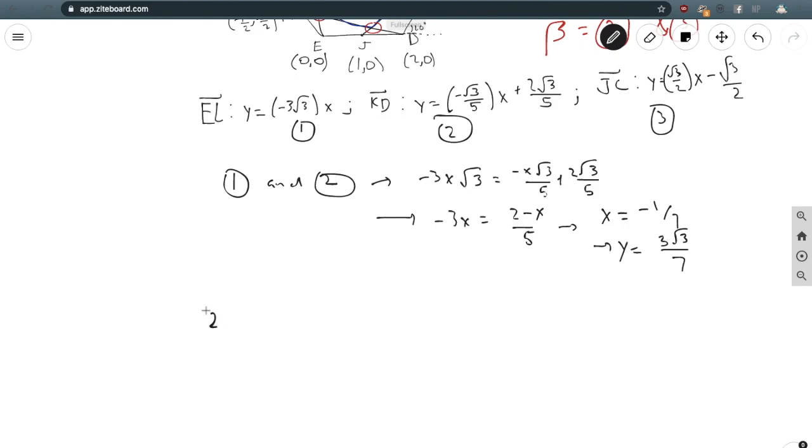We can do the same process to find beta, the intersection of lines 2 and 3. Instead of directly setting up the equation, I know the √3s will cancel, so I can directly go to the proportion (2-x)/5 = (x-1)/2, which gives us x = 9/7, which means y = √3/7.